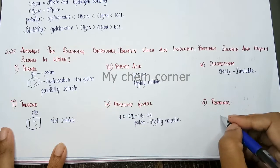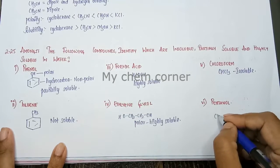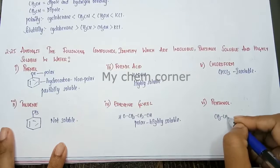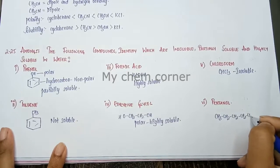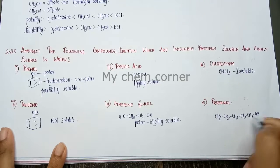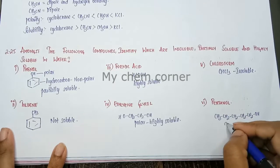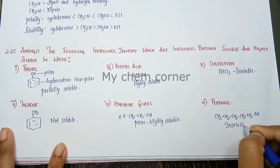Last one is going to be pentanol. Pentanol is this where you have a 5-carbon chain with an OH. It is a simple hydrocarbon chain here, so this is also going to be insoluble.